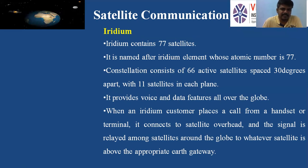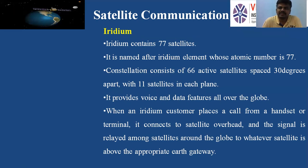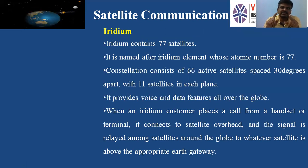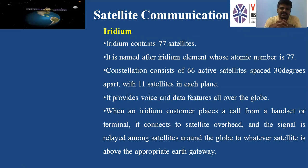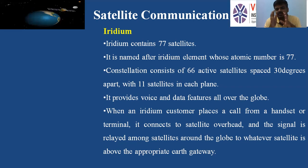Iridium contains 77 satellites. Iridium is the name of an element in the periodic table. The reason iridium was chosen as the name is that 77 is the atomic number of iridium in the periodic table, and since there are 77 satellites in this group, it was named iridium. The constellation consists of 66 active satellites spaced 30 degrees apart. Iridium satellites are generally used to provide voice and data communication.